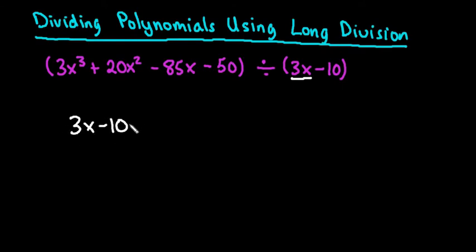In long division, the dividend goes underneath the division symbol, the divisor goes on the outside, and the quotient is your answer up here.